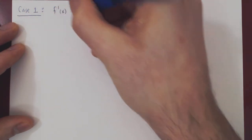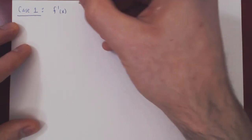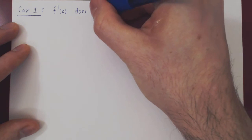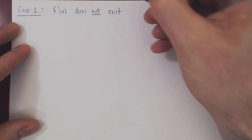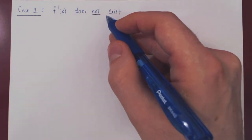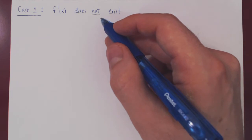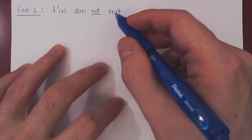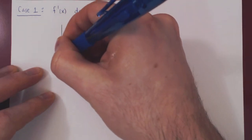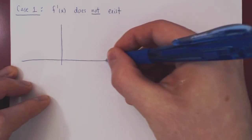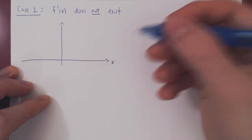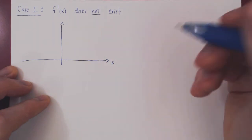If f prime of x does not exist for a given value of x, could we have a point where the function attains a maximum or minimum value? The answer is yes, and we've already seen an example of this. We can simply consider the absolute value function on the interval from negative 1 to 2.